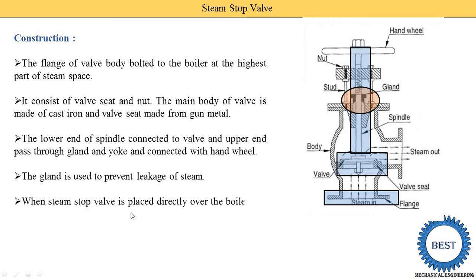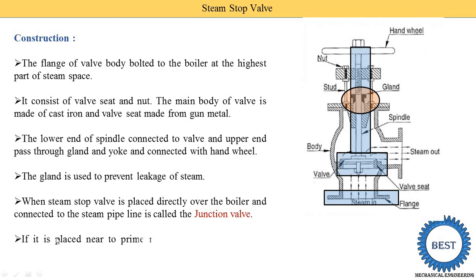When the steam stop valve is placed directly over the boiler and connected to the steam pipeline, it is called a junction valve. If it is placed near the prime valve or installed near the turbine, it is normally called a steam stop valve.